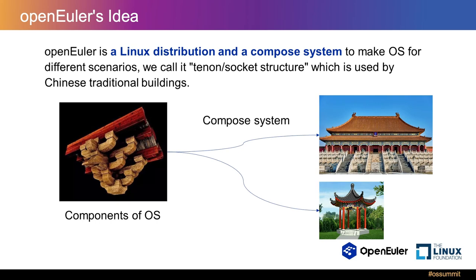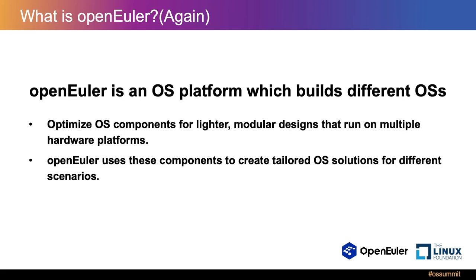We have already built some OS releases with these ideas and tools, and they have already had very large-scale deployments. Zhongjun will also give some details about the building tools called EulaMaker in the next part. So with all this information, we might have a new understanding of what OpenEuler is — it is actually not only an OS distro, but an OS platform that builds different OSes. The OpenEuler community has optimized OS components for lighter modular designs that can run on multiple hardware platforms, and uses these components to create tailored OS solutions for different scenarios.